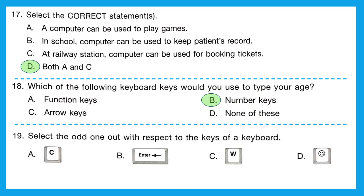Question 19: select the odd one out with respect to the keys of a keyboard. Option A is a key with C — yes, the alphabet C is on the keyboard. Option B is the enter key — yes, it's on the keyboard. Option C is the letter W — yes, it's on the keyboard. Option D is a smiley — no, we don't have any smiley on the keyboard. So the correct answer is option D.